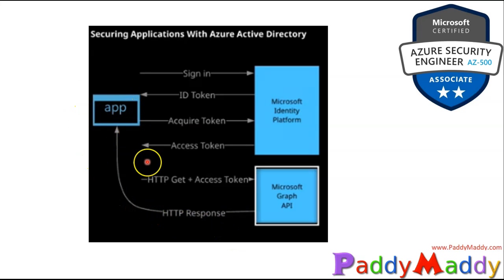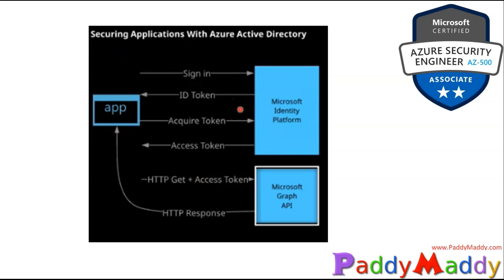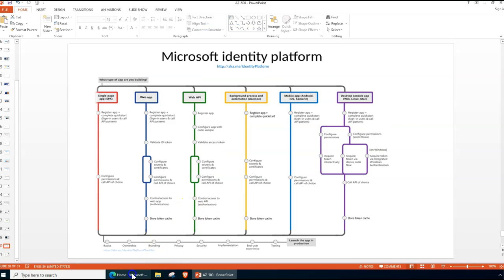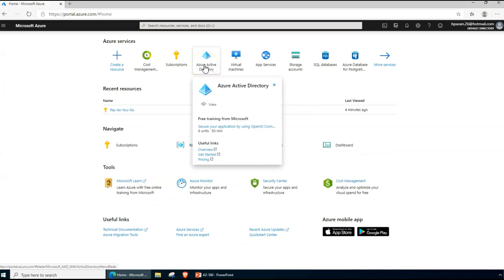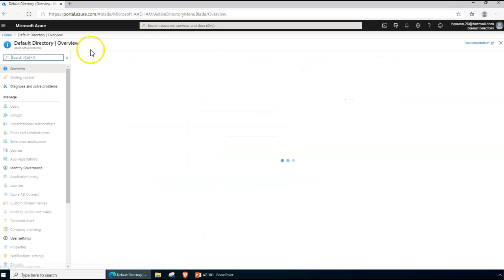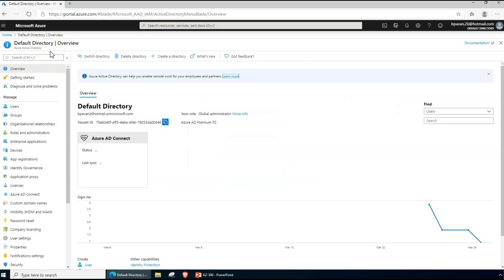Before we discuss scopes and other permissions, let's run through a demo. This background information will be revisited in an upcoming lecture. For now, let's go back to the Microsoft Azure portal and register an application. We will go to Microsoft Azure Active Directory, and under App Registrations you can register any application.